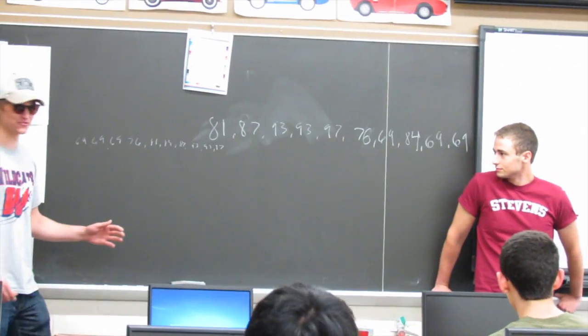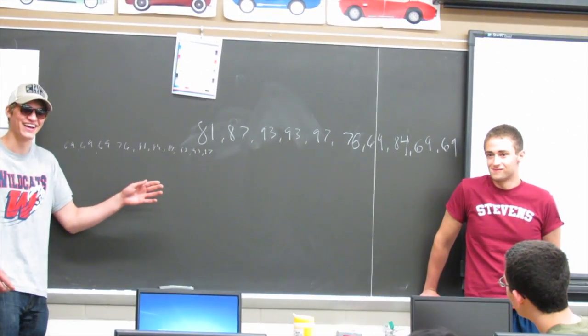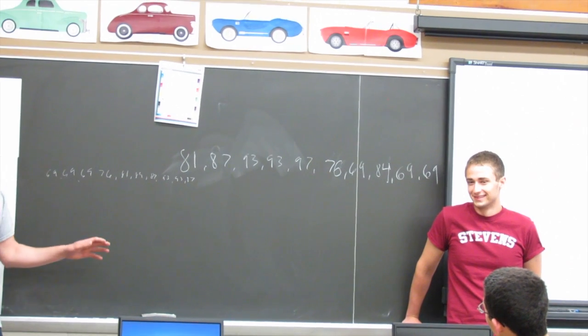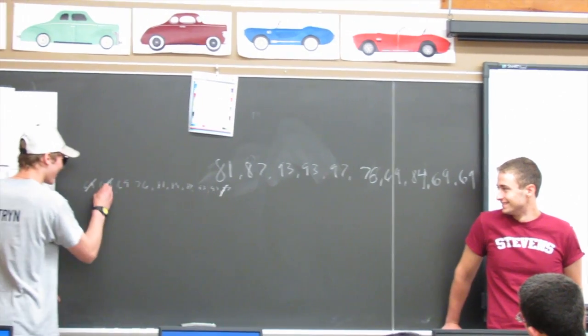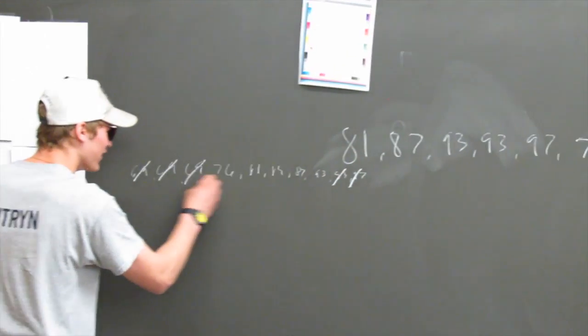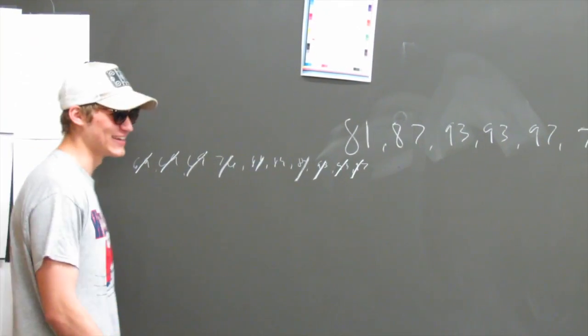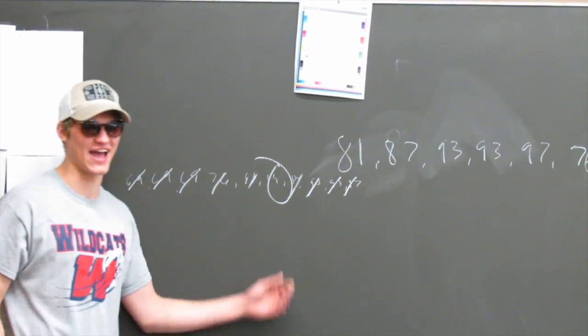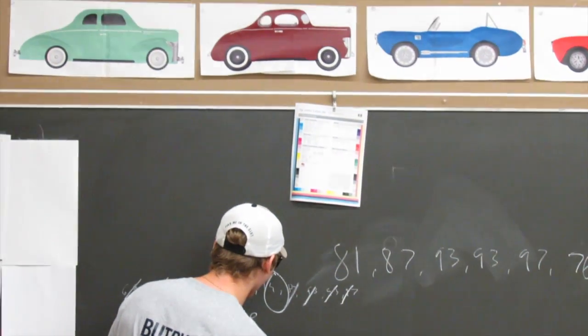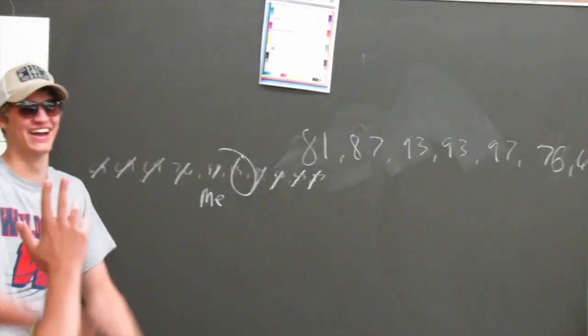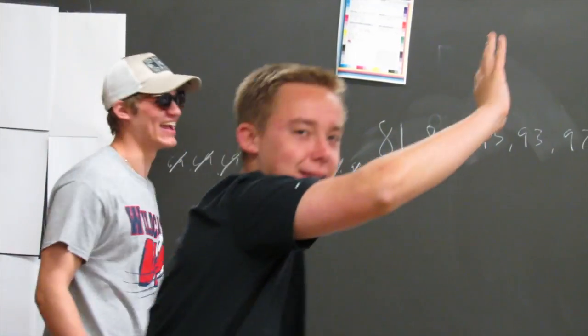Alright, to find the median, you order the numbers from least to greatest, and you do this. And then your median is 84.